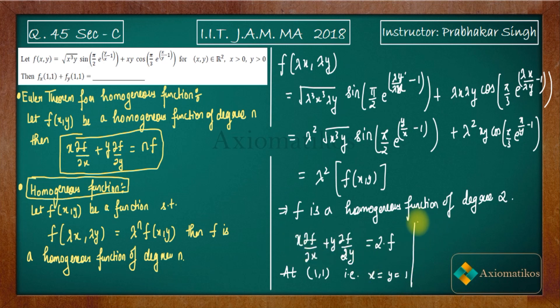According to this relation, we get fx + fy at (1,1) equals twice f at (1,1). The question is now totally converted to finding 2f(1,1). If you somehow find f(1,1), you are done with this problem.